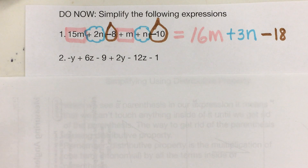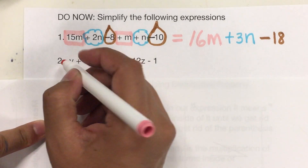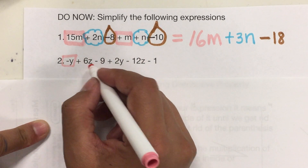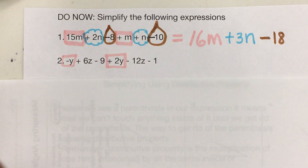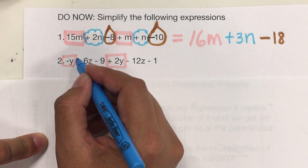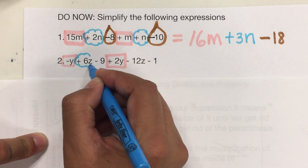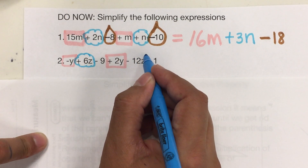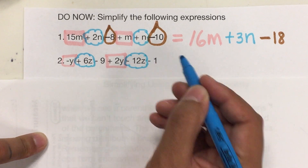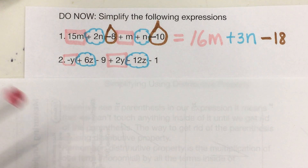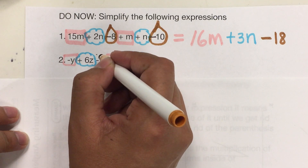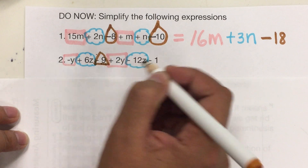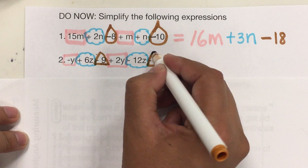Now let's do the second one. We have negative Y in here, another one with Y is positive 2Y, and that's it. Then we have letter Z: 6Z, positive 6Z, negative 12Z. And finally, negative 9 and negative 1.